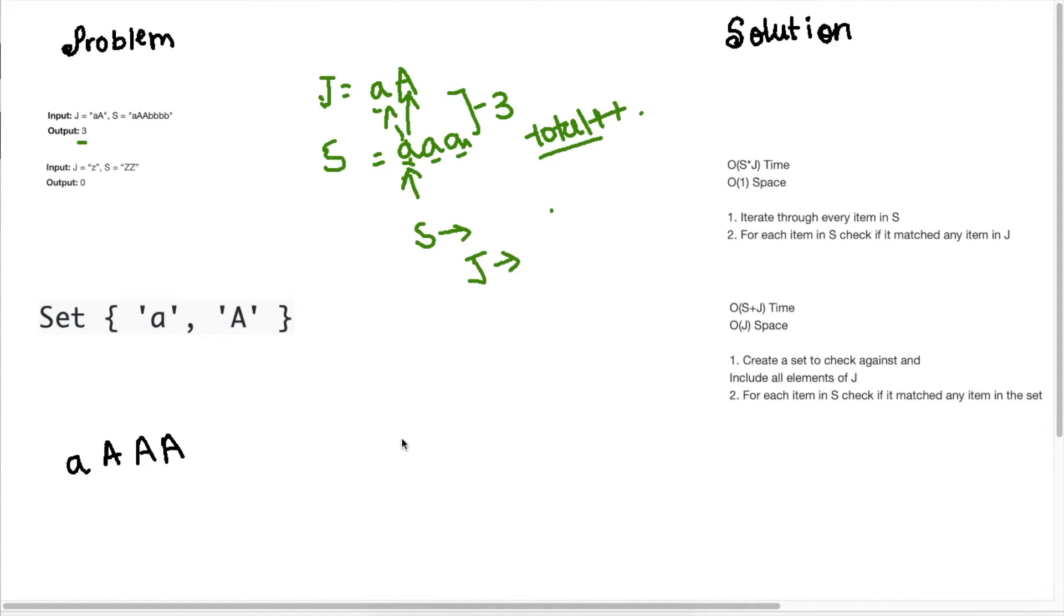Great, so to optimize the solution, the data structure that we can think of implementing is a set. And the reason this would be more efficient is because the lookup time in a set is O(1), so we can directly access each of the items in the set. So if we had a set here and we wanted to check, oh does this A, so we would put the elements of J in the set. So if we had a set of J and if we wanted to access this element A, we have direct constant time access to each of the elements in the set, and that's what makes this algorithm faster if we use a set.